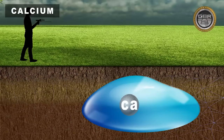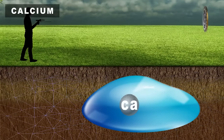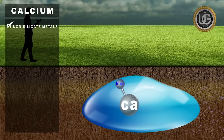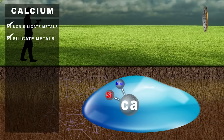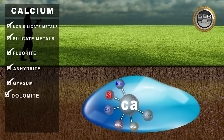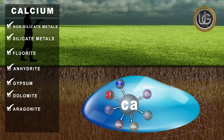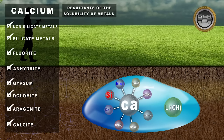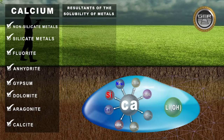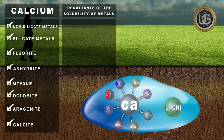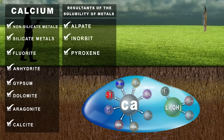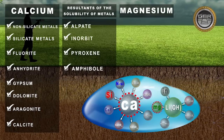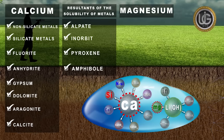There are various sources of calcium ions such as non-silicate metals, silicate metals, fluoride, anhydride, gypsum, dolomite, aragonite, and calcite, as well as the resultants of melting metals found in stones and decomposed in waters such as alpete, anerbit, pyroxene, and amphibole. Magnesium comes after calcium, which is the second most important of the positive main basic ions present in the groundwater.